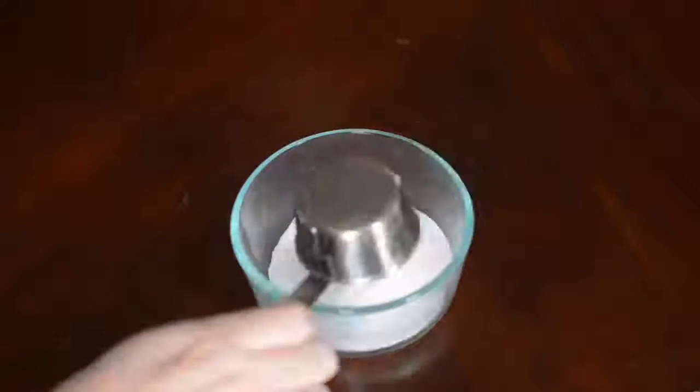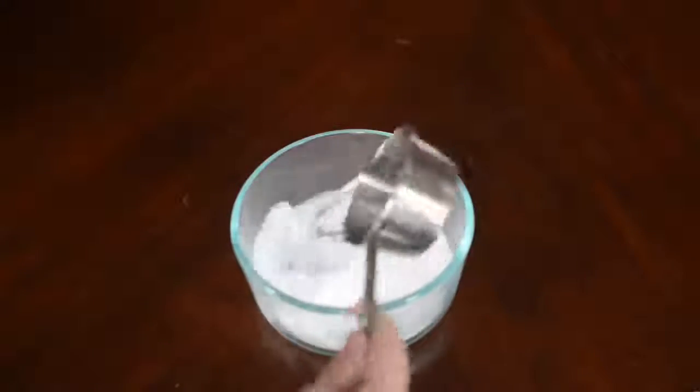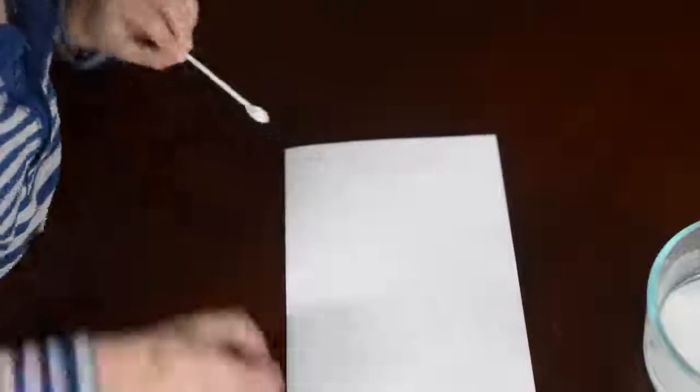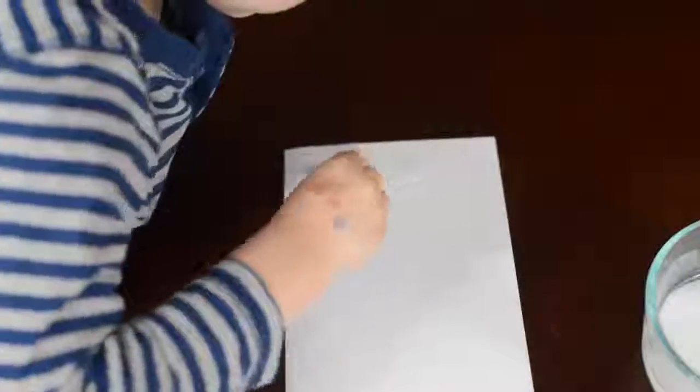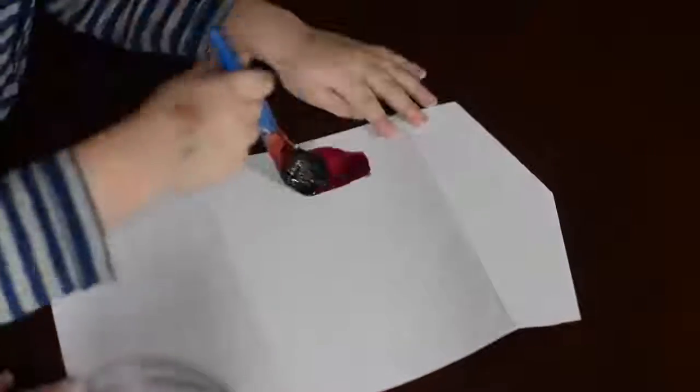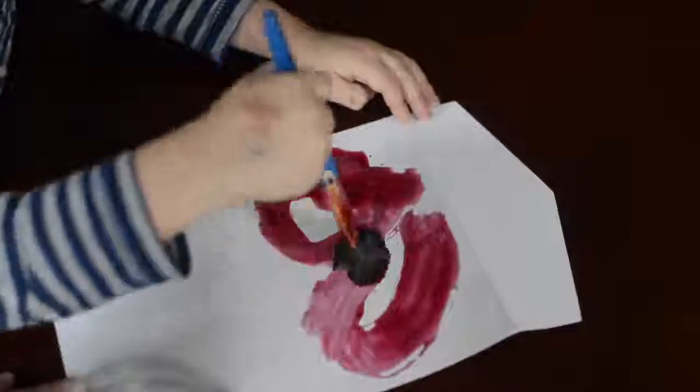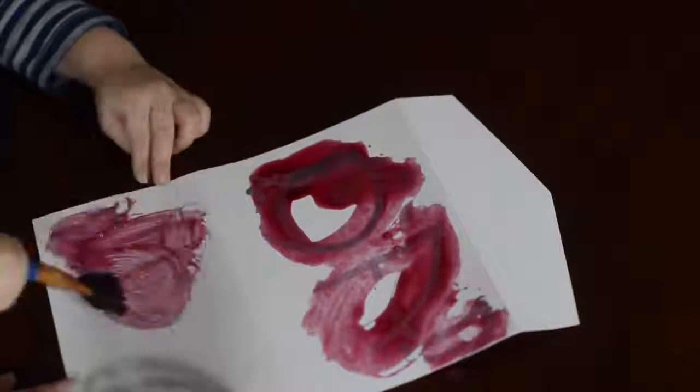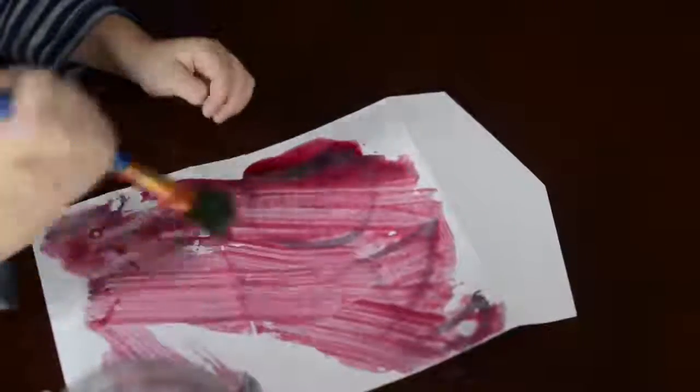And then I took a third cup of baking soda and a third cup of water and mixed that together. And then we drew our secret messages on our cards. And then you can have your friends paint with grape juice to reveal the secret message. This happens because the juice is acidic and the baking soda is a base.